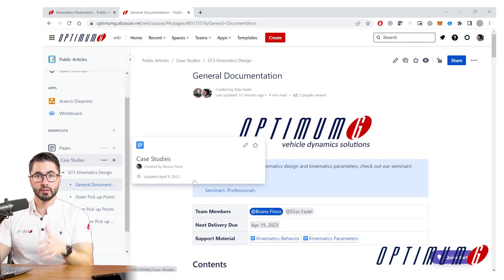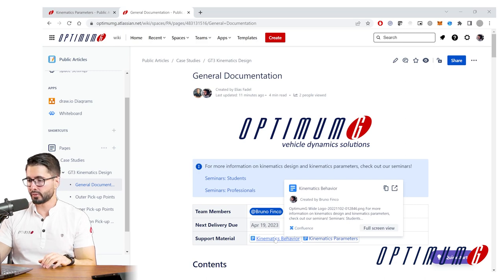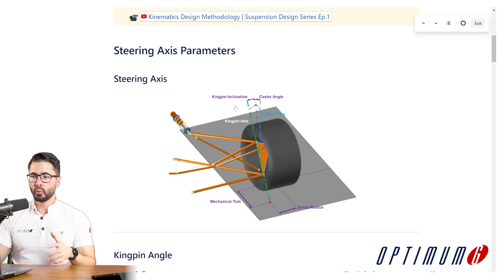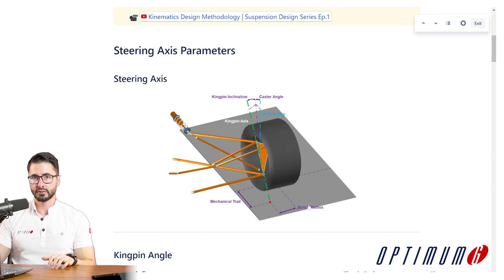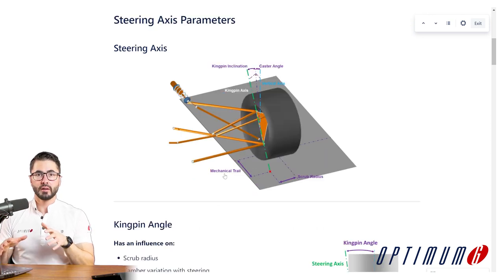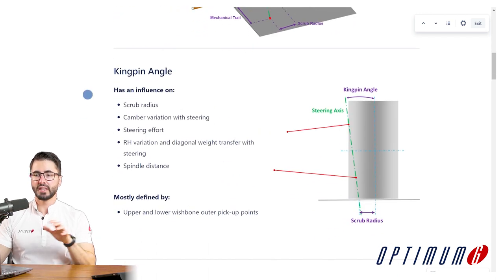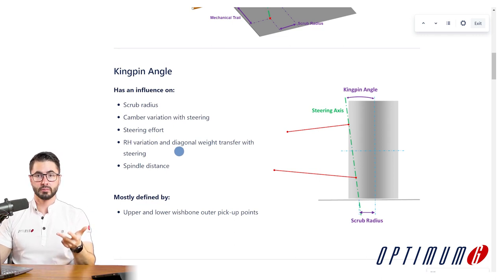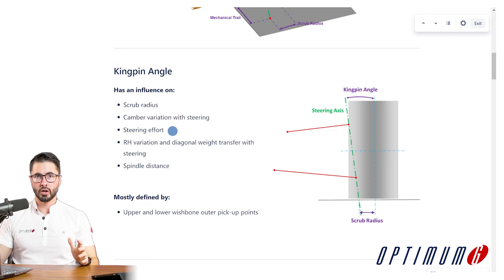For that we created internal documentation which you also have access to about these parameters. The wishbone pick-up points will define a steering axis — shown here in green — giving us a kingpin inclination, caster angle, as well as mechanical trail and scrub radius. If we start by looking at the front view, we have the kingpin angle, which will define for example scrub radius, camber variation, ride height variation, diagonal load transfer with steering, and steering effort, among other parameters.